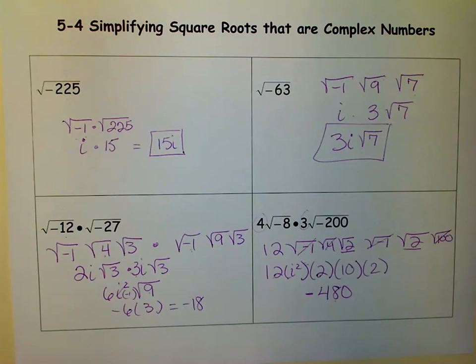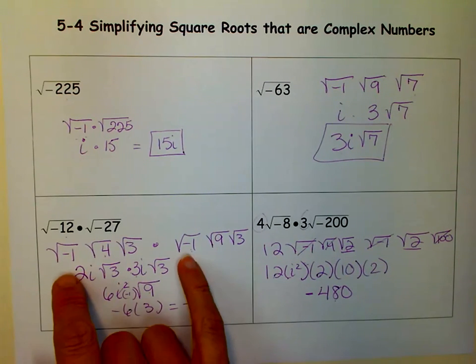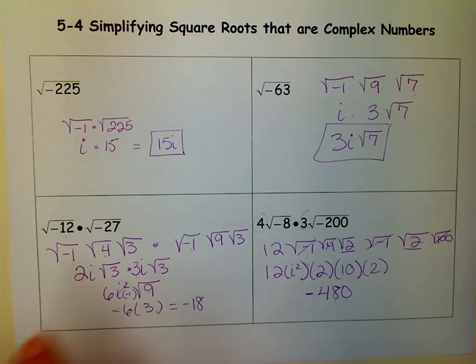So it's not too bad if you remember simplifying square roots from last year. But if not, you might have to do a little review. Just remember, the most important thing when you're doing these is to make sure you have a negative 1 as a factor when you're factoring things out. Good luck. M squared, signing out.